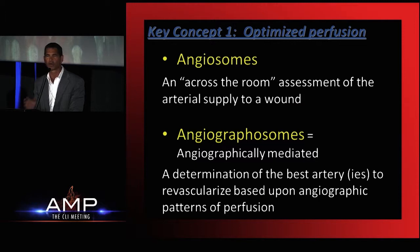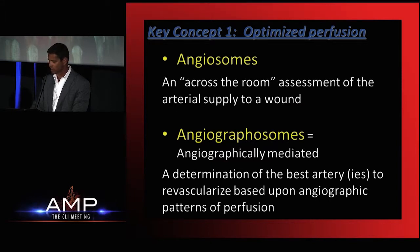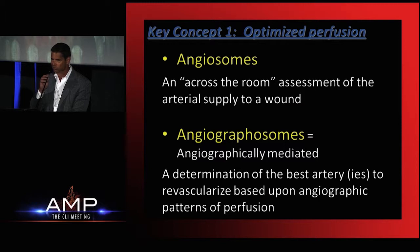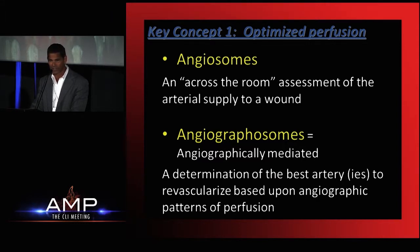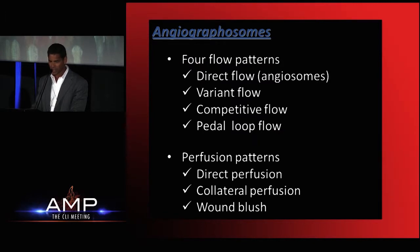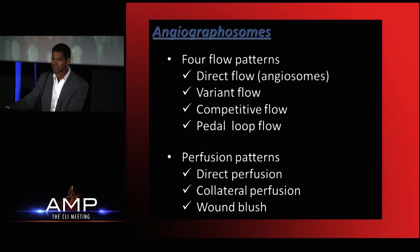The first key concept, which we've already heard about a little bit today, is this idea of optimizing perfusion to the ischemic tissue bed, whether it be a wound or a rubric toe or whatever might be causing some sort of ischemic pain. I'm going to talk about this idea of angiosomes, which is based upon free flap technology and is an across-the-room assessment, versus an angiographosome, which is looking at the angiogram, understanding vascular variations, and revascularizing single or multiple vessels based upon the angiographic pattern of perfusion. This is a relatively advanced concept in which numerous patterns exist whereby you actually perfuse wounds other than the typical direct flow angiosome with which we're most familiar.